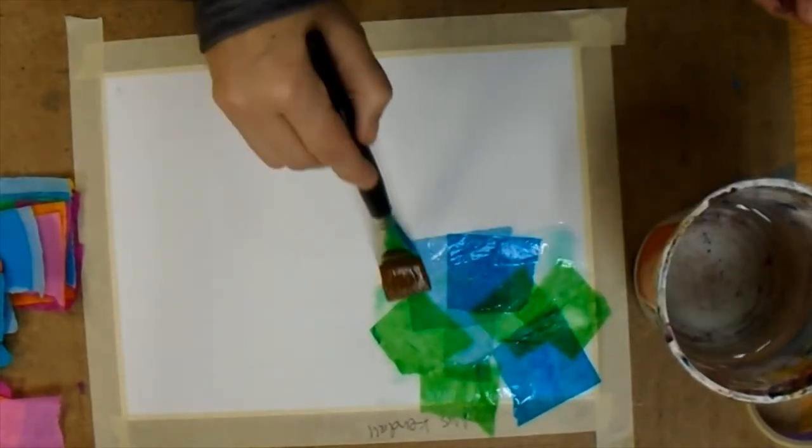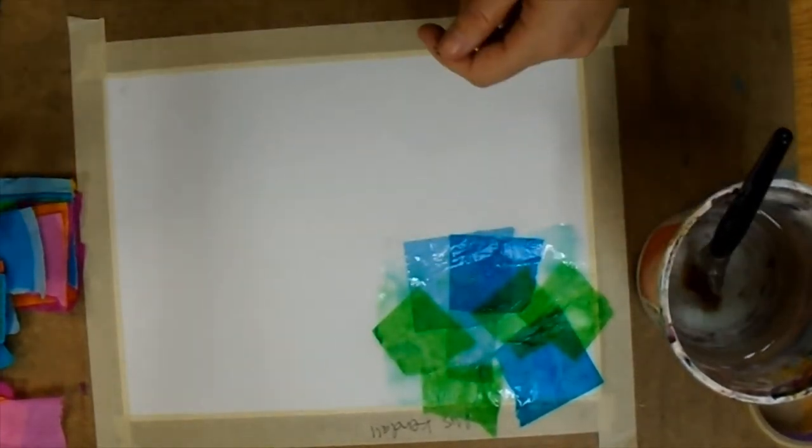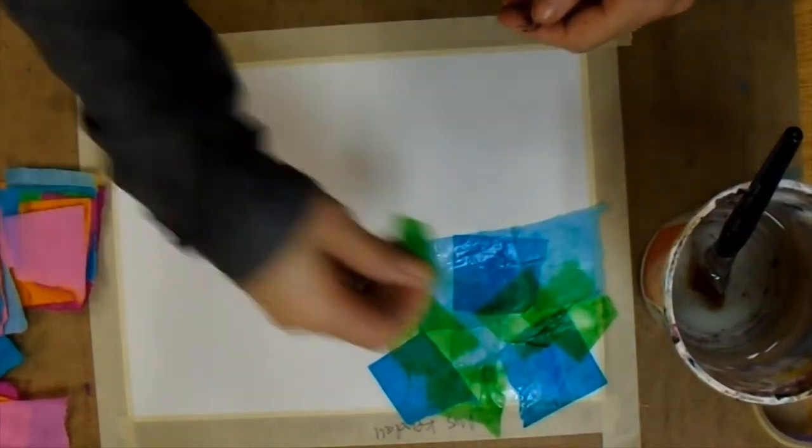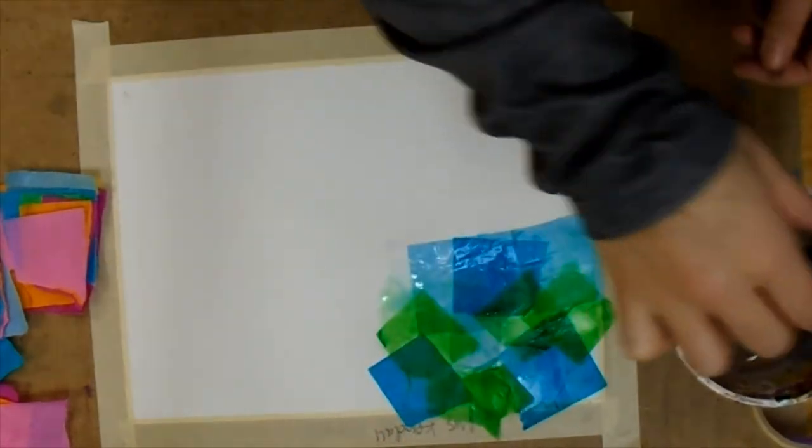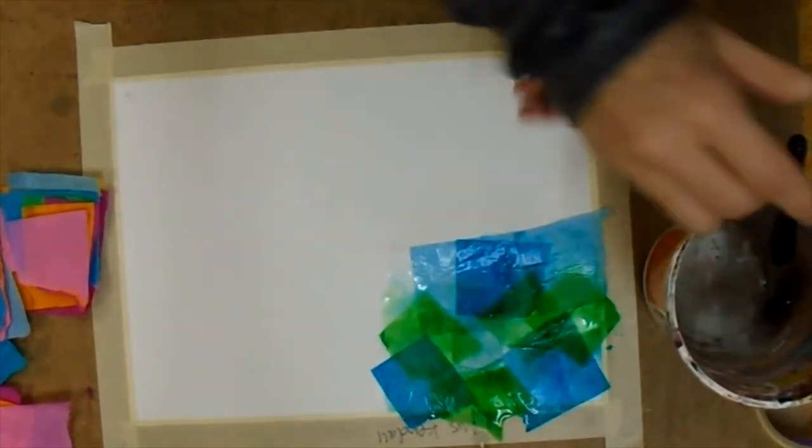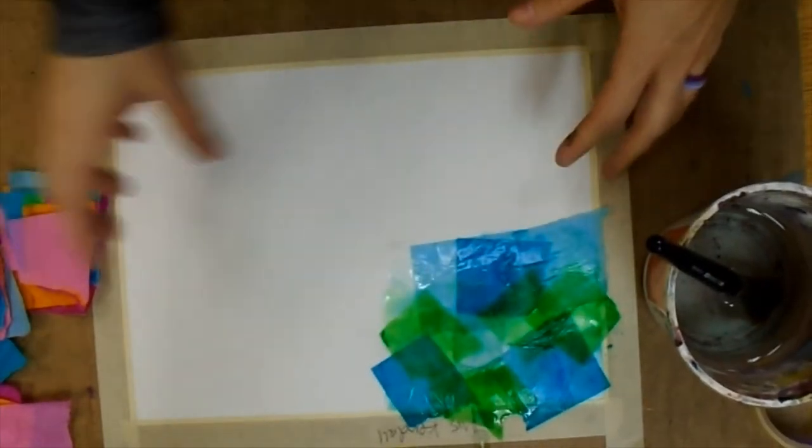And what's happening is the ink is coming out of that tissue paper and it's leaving a print behind. So the key is you want your tissue paper to be flat on the paper. You don't want to leave it crumpled up because then you're not getting as much ink out of it.